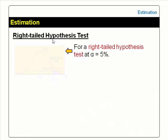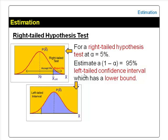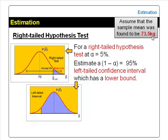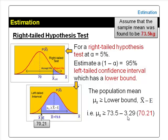Consider a case where we are doing a right-tailed hypothesis test at α = 5%. We have to estimate a 95% left-tailed confidence interval. A left-tailed interval has a lower bound, that is a lower limit, but no upper limit. Assuming the sample mean computed from the sample of 25 adults is 73.5 kg, the peak of the confidence interval is at the sample mean, 73.5 kg. The lower bound is given by the sample mean minus the margin of error. We say the population mean is greater than or equal to the lower bound, i.e., greater than or equal to the sample mean minus the margin of error. The margin of error for a one-tailed interval at 95% confidence level was earlier found to be 3.29 kg. The 95% left-tailed confidence interval gives: population mean ≥ 73.5 − 3.29 = 70.21 kg.